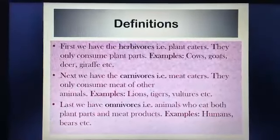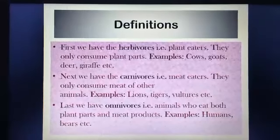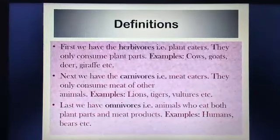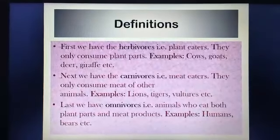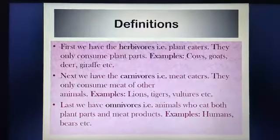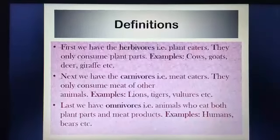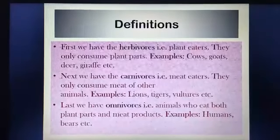And last, we have omnivores, that is animals who eat both plant parts and meat products. Examples are humans, bears, etc.